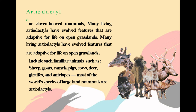Artiodactyla, or cloven-hoofed mammals. Many living artiodactyls have evolved features that are adapted for life on open grasslands. They include such familiar animals as sheep, goats, camels, pigs, cows, deer, giraffes, and antelopes. Most of the world's species of large land mammals are artiodactyls.